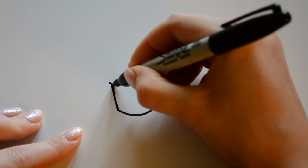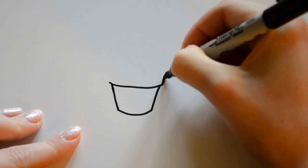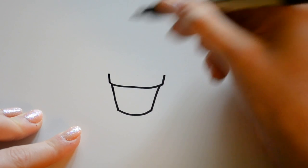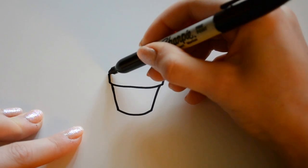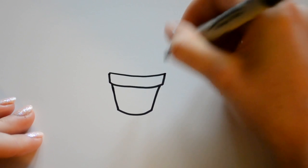Then for the top part you're just going to want to draw another curved line, but it's going to stick out a little bit. And then from there you draw two straight lines going upward, and then another curved line connecting those two. Pretty simple.